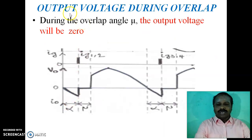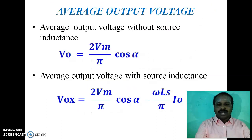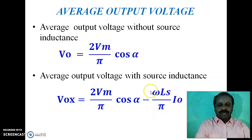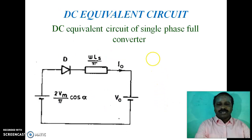Output voltage during overlap: During the overlap angle mu, the output voltage will be zero. After the application of gate pulses IG1 and IG2 at angle alpha, this is the period of overlap angle, and during the overlap angle the output voltage is zero. Average output voltage without source inductance V0 is given by 2Vm/π · cos(α). With source inductance, the average output voltage is V0x = 2Vm/π · cos(α) − (ωLs/π) · I0. The average output voltage is thus reduced by the factor ωLs·I0/π from the full converter output voltage.